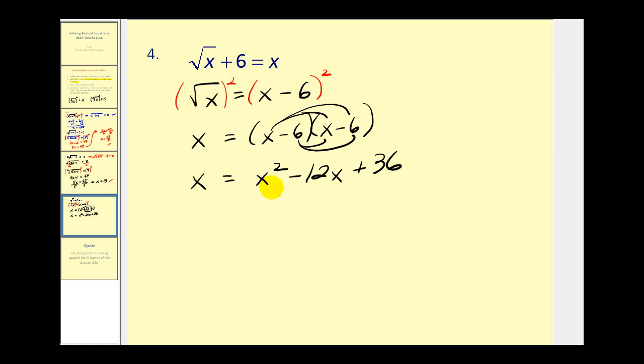Okay, we have a quadratic equation now, so we're going to set it equal to zero and see if we can factor it. So if we subtract x on both sides, we're going to have zero equals x squared minus 13 x plus 36. I believe this is factorable. Factors of x squared, x, x. Are there factors of 36 that add to negative 13?